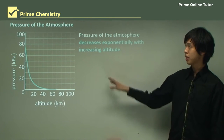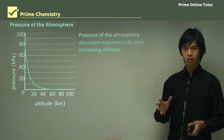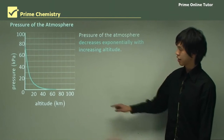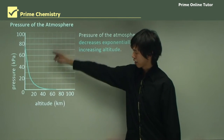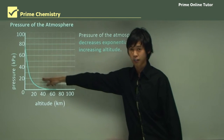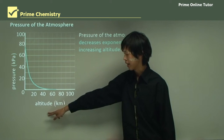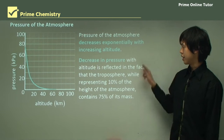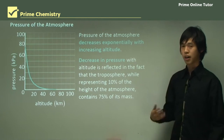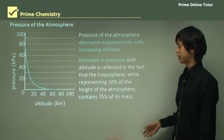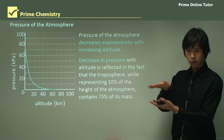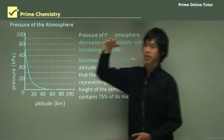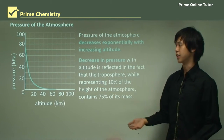Pressure decreases as there is less air above us, but what actually happens is it decreases exponentially. At zero altitude it's at a maximum, then decreases very rapidly as we continue to go up in altitude — this is exponential decay. This is reflected by the amount of mass present in each layer: the troposphere, the smallest layer and the one closest to the Earth's surface, has the most mass.